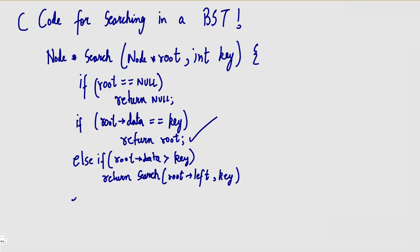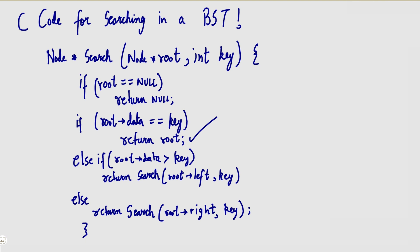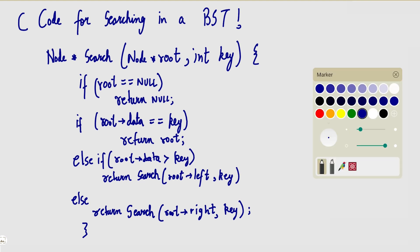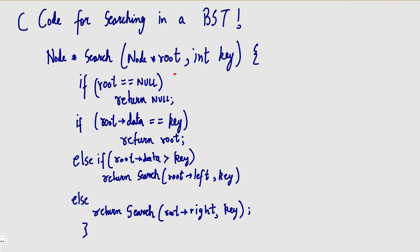Else, I will return the same search function called on root's right child with the same key. And that completes my function. So first I checked if root is null — return null. Then if root's data equals key — return root. If root's data is greater than key — search left subtree. Otherwise — search right subtree.